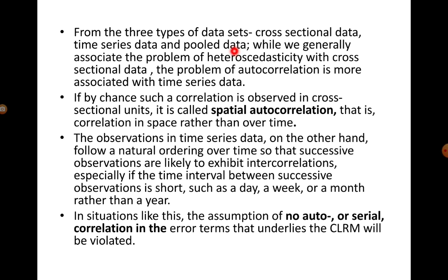Among these three data types, the problem of heteroscedasticity is generally seen in cross-sectional data, whereas the problem of autocorrelation is more associated with time series data. It is not impossible that even in cross-sectional data you may have autocorrelation — if autocorrelation is observed in cross-sectional units, we term it spatial autocorrelation, meaning it is correlation in space rather than over time.